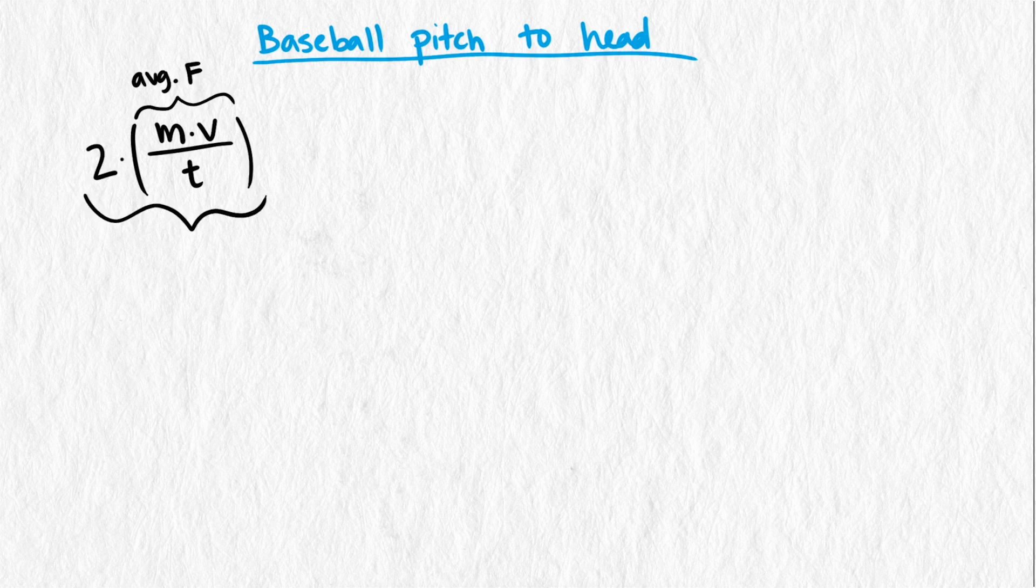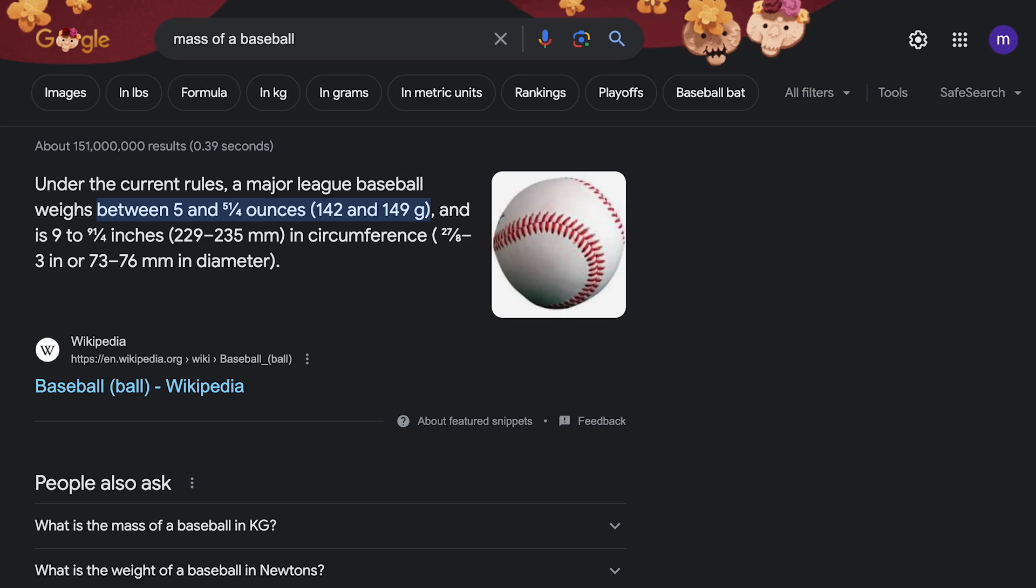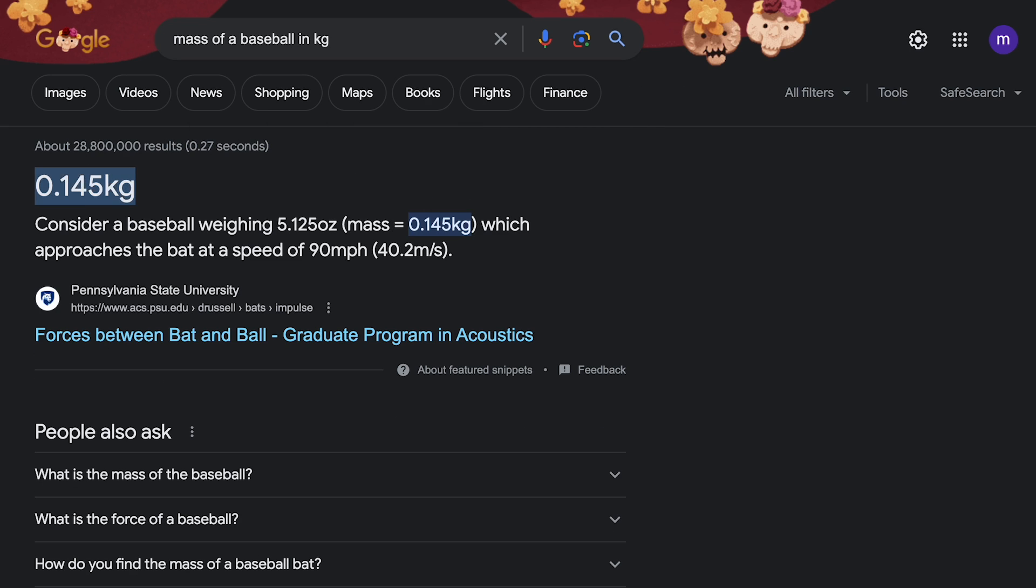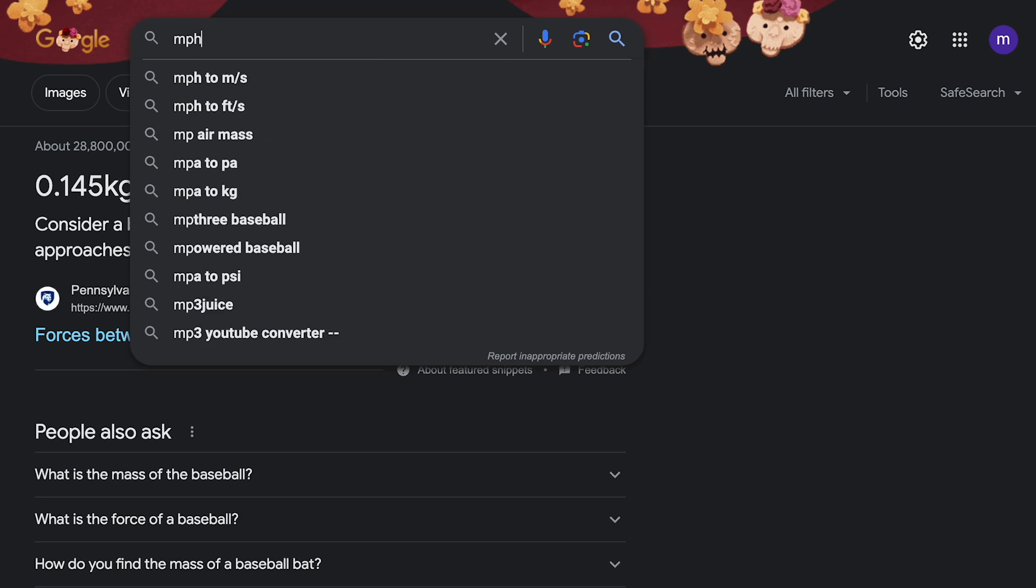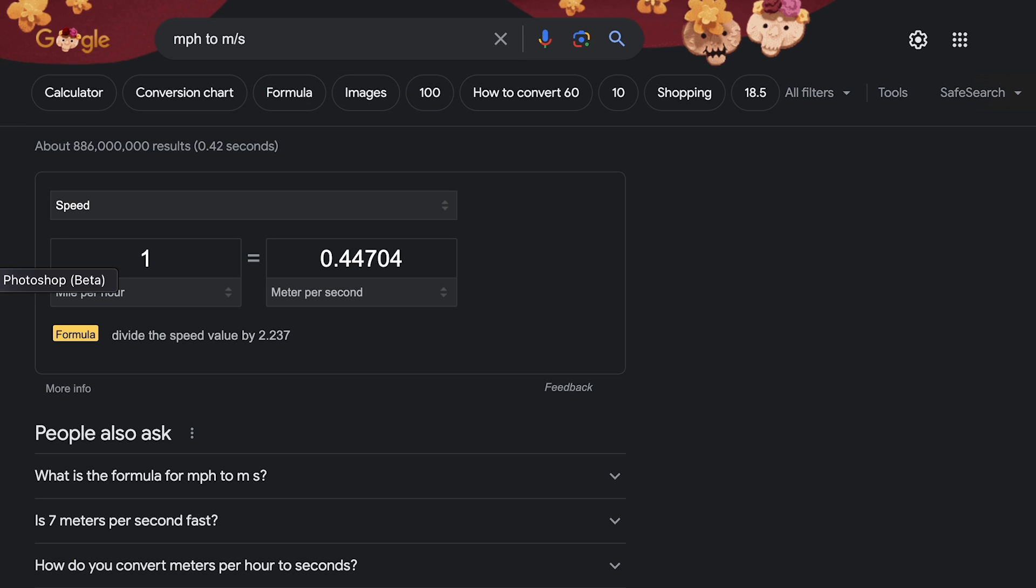Let's estimate the impact force of this event. Here we can use Google to get some estimates. The average baseball has a mass of 0.145 kilograms, and we know that the velocity was 85 miles an hour. To make our units match, we'll be measuring time in seconds, so 85 miles an hour converts to about 38 meters per second.